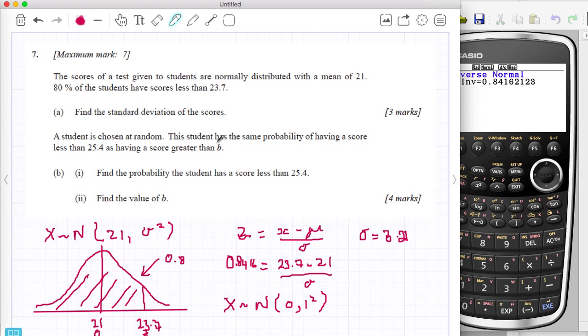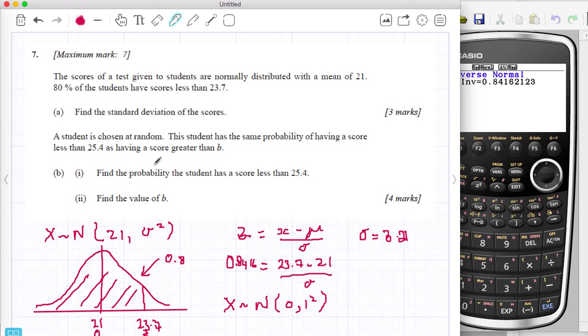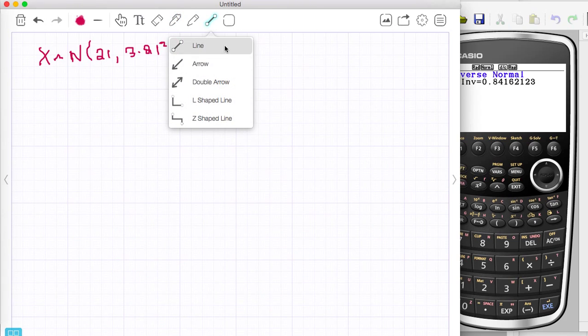The second part. A student is chosen at random. This student has the same probability of having a score less than 25.4 as having a score greater than 25.4. Find the probability that a student has a score greater than 25.4. So what I've actually got now for the second part is that I'm normally distributed 21 and 3.21 squared. And I'm looking for a student getting higher than 25.4.